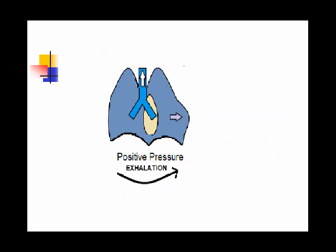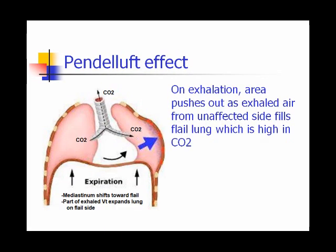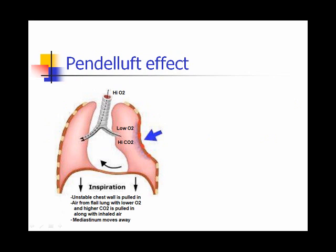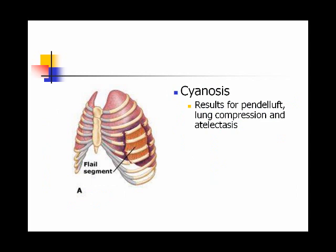This rocking back and forth of the chest causes a situation called the pendelluft effect. As the patient inhales, the chest wall caves in, and it also pulls air from the affected flail side into the lung of the good side. Then on exhalation, the good-side lung exhales, but the air doesn't go out the trachea as much as it goes over to the bad side, causing the flail area to bulge out. You're essentially re-breathing air back and forth between the good lung and the bad lung, which depletes O2 and causes CO2 to rise.